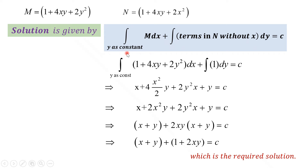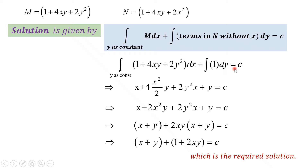The solution is given by: integration of m dx (taking y as constant) plus integration of n dy (taking only the term without x) equals c. Substituting the values of m and n, we get integration of (1 + 4xy + 2y²)dx plus integration of 1 dy equals c, since the remaining term of n without x is 1 only.